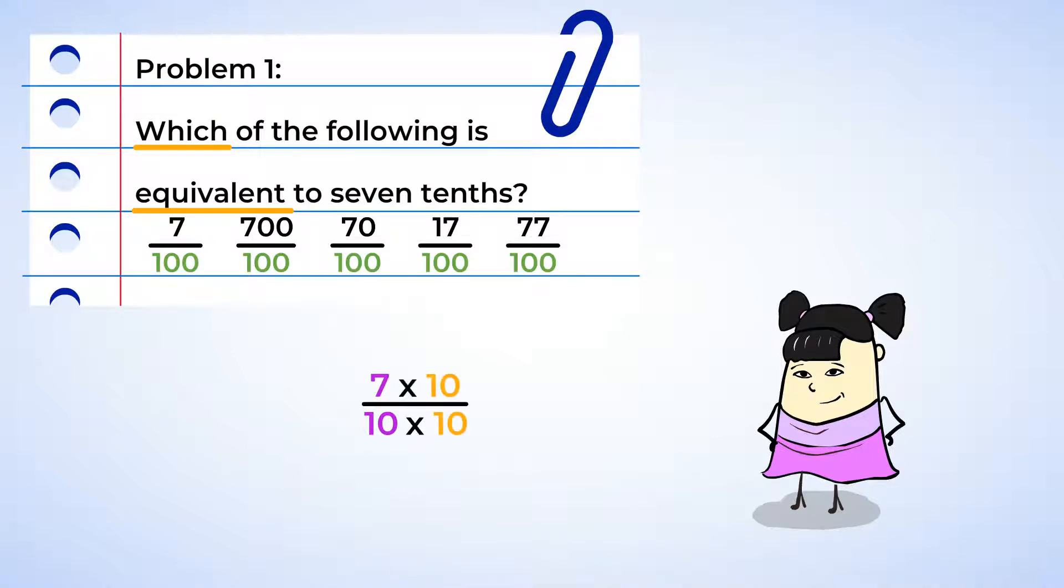When we repeat that for the numerator, we get 7 times 10, or 70. So we are looking for 70 one hundredths. There it is! Alright, try something different.